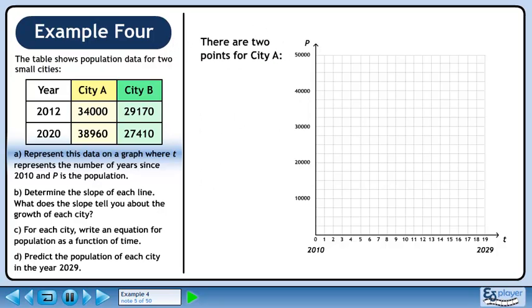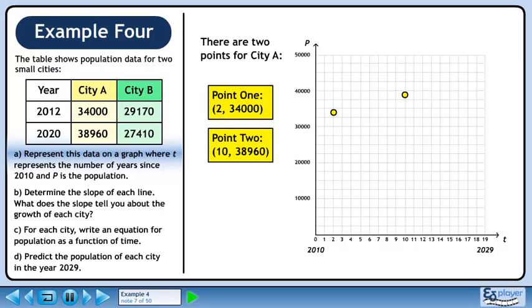There are two points for city A. Point 1 at 2, 34,000. Point 2 at 10, 38,960.